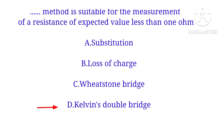Which method is suitable for the measurement of a resistance of expected value less than one ohm? For measuring resistance less than one ohm, Kelvin's double bridge is used.